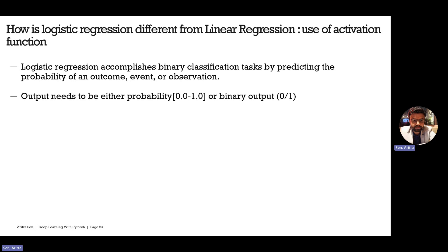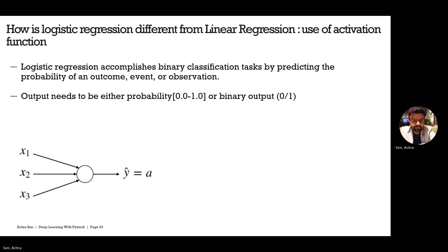Using this probability, we can also convert it to a binary output of 0 or 1. For example, we can set a threshold value of 0.5: if the probability is greater than 0.5, the output is 1, else 0. This threshold is flexible — it's not that you always have to use 0.5. It depends on the domain and the problem you are trying to solve using machine learning.